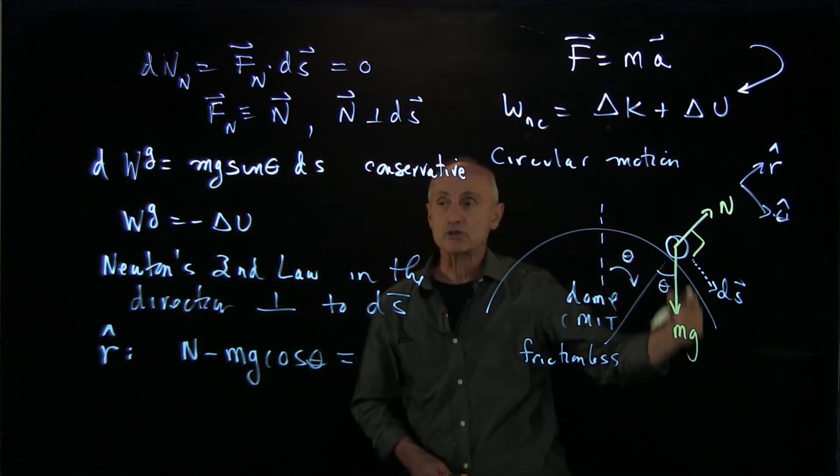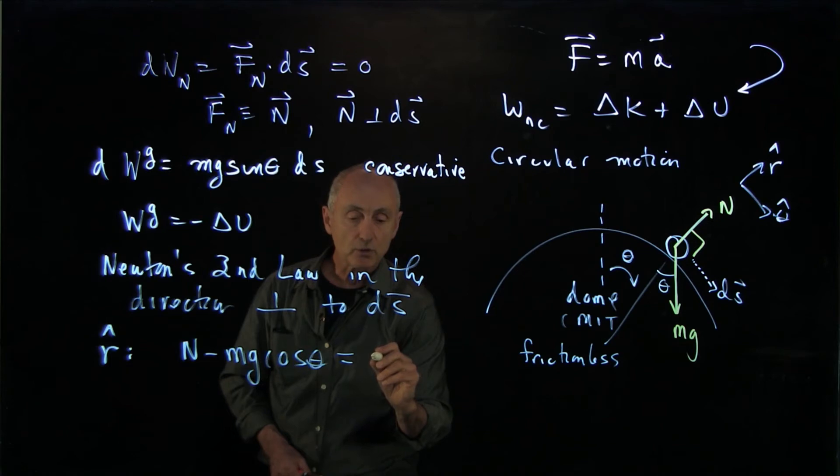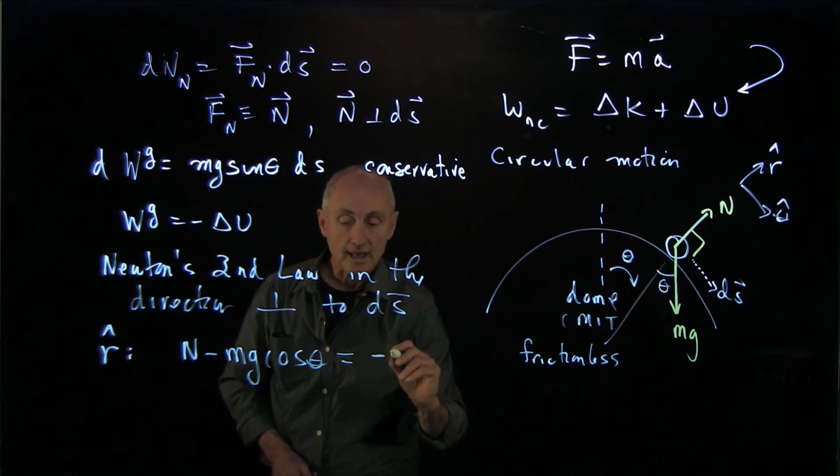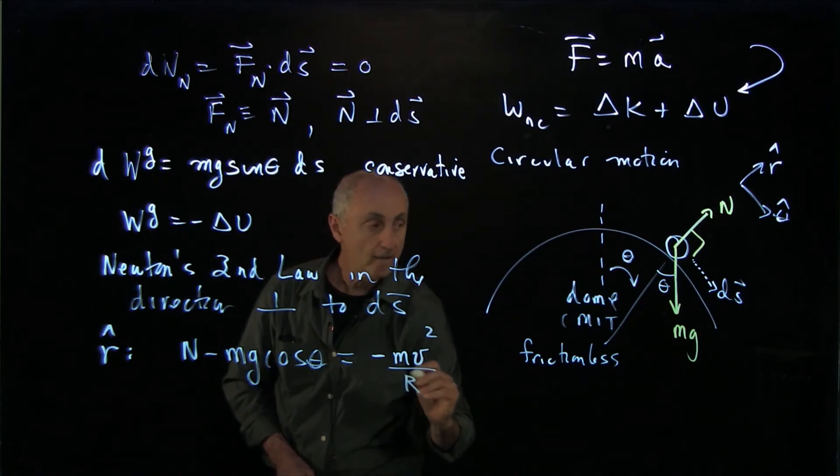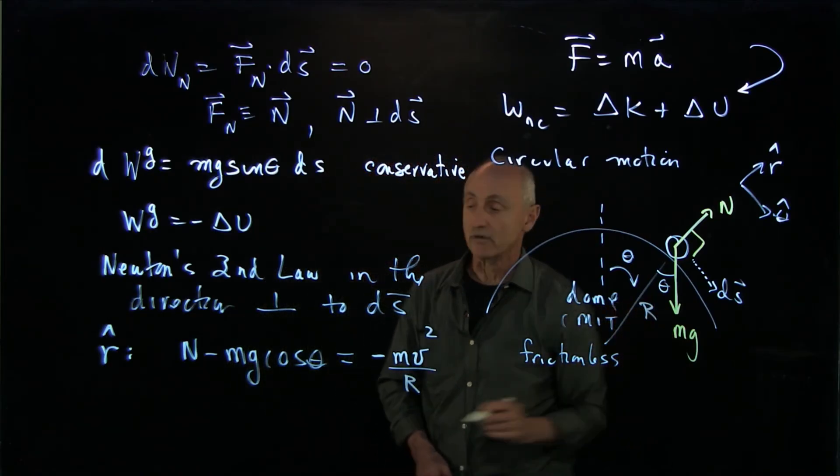And the object is undergoing circular motion, so it's equal to minus mv squared over r, where r is the radius of the dome.